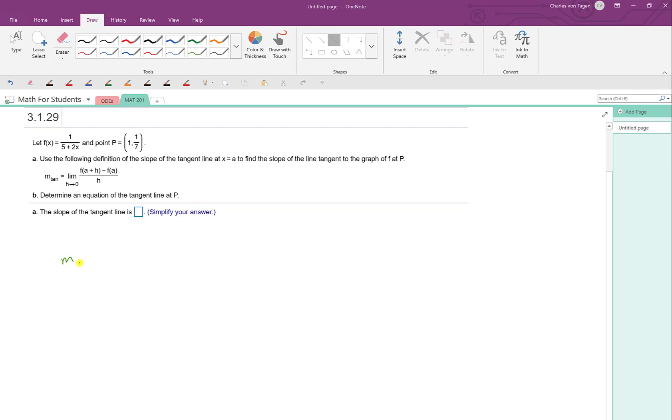So we would say that the slope of the tangent line is equal to the limit as h approaches 0 of f of, and who's playing the role of a in this case, that would be 1. So f of 1 plus h minus f of 1 all over h. So I'll go ahead and work it this way because this is the way the question asks us to compute the slope.